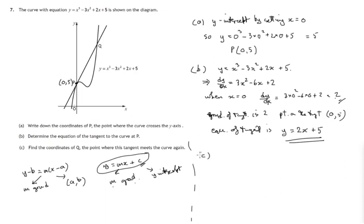So all set for the last part, find the coordinates of q, the point where this tangent meets the curve again. So for point q, now point q lies both on the curve and on that straight line tangent. So we have to solve these two equations together to find a y and an x value that satisfies the cubic equation and also the straight line equation.